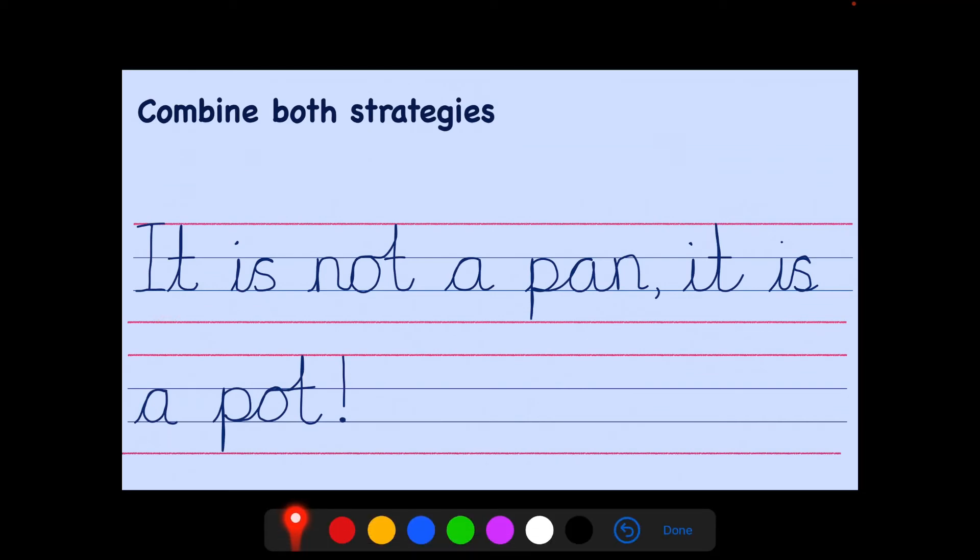Putting them in a sentence with new handwriting maybe for you. It is not. That's a top joiner. Something else to think about. A pan. It is a pot. Exclamation mark to make it very clear.